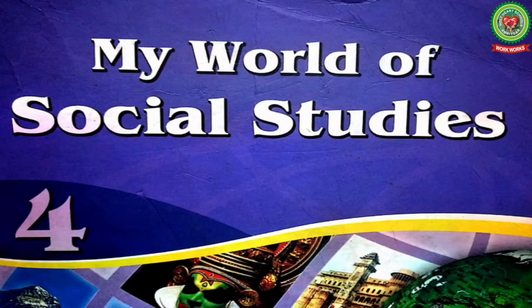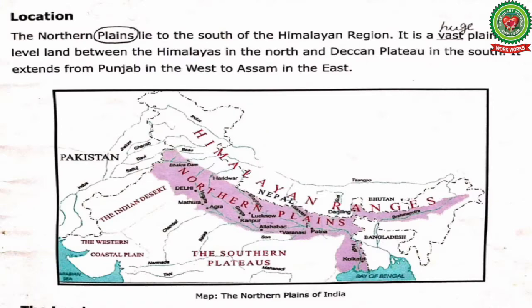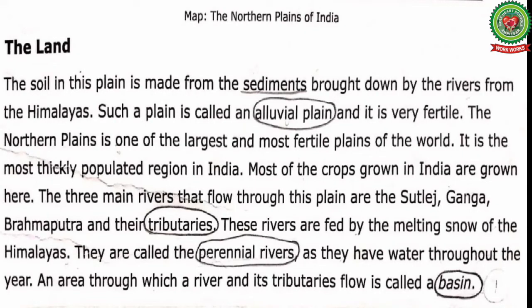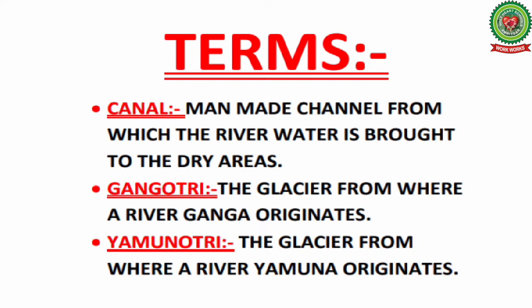Hello students, welcome back to SSD class. Take out chapter number three, the northern plains. In the last class we did location and land of the northern plains. Here are some review questions: Where are the northern plains found in India? How were the northern plains of India formed? Name two types of plains in India, and name the three main rivers that flow through the northern plains.